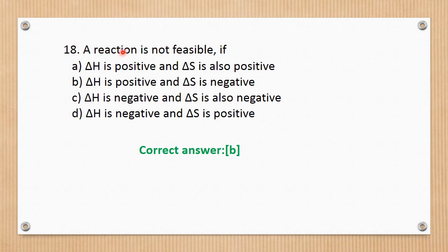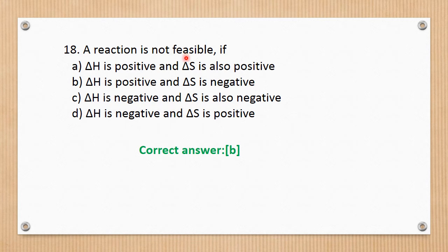Question number 18. The reaction is not feasible if delta H is positive and delta S is negative. If delta H is negative and delta S is positive, the reaction is more favorable. The reaction is not possible when delta H is positive and delta S is negative. The correct answer is B.